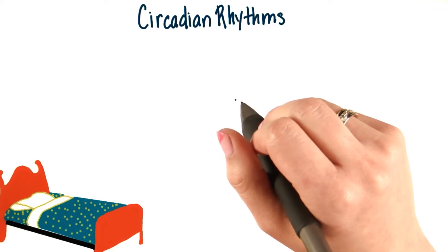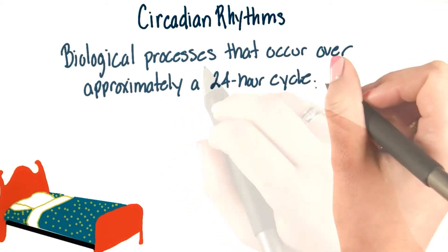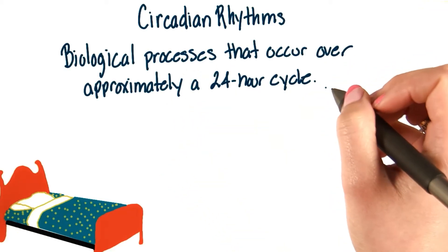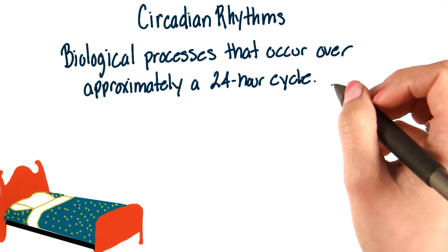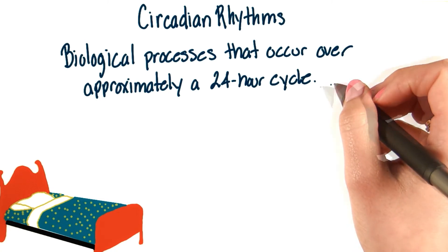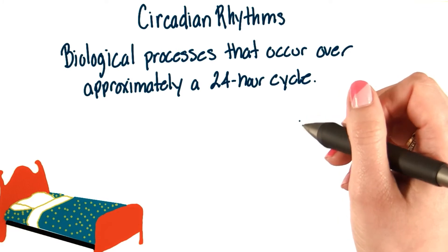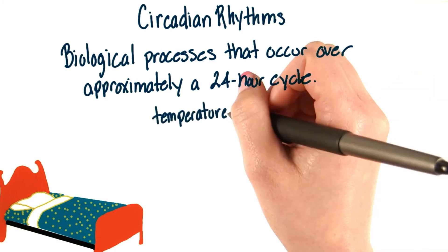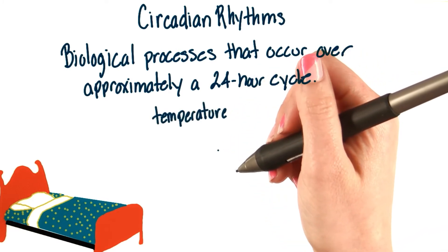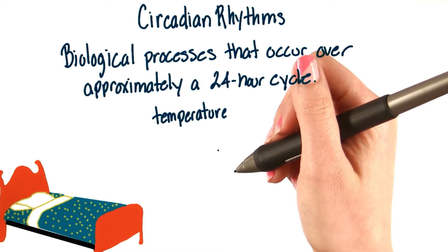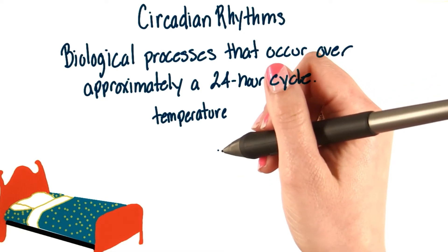Our sleep patterns are a result of circadian rhythms, which are biological processes that occur over approximately a 24-hour cycle. For example, throughout a 24-hour period, our bodies will change in temperature. It'll peak a few hours before we go to bed and soon after we wake up, but it will decrease when we're asleep.